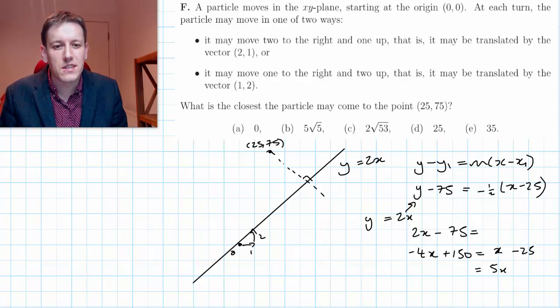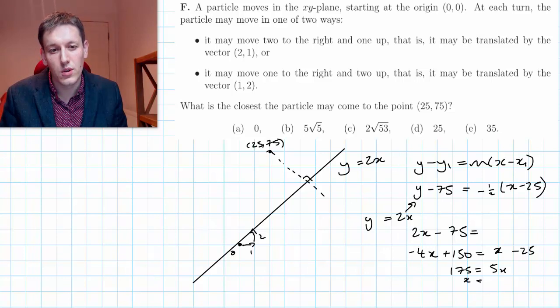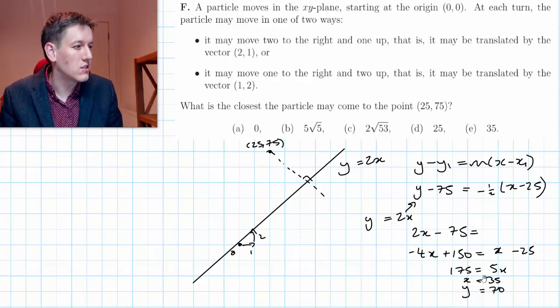That's equal to x minus 25, so that gives me 5x is equal to 175. That gives me the answer x dividing by 5 is equal to 35, and y equals 2x so y is equal to 70. It has turned out to be on a nice integer coordinate for x.